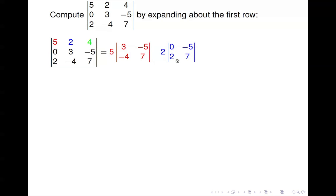Continuing across the first row, we have the 4. We multiply 4 by the determinant of the matrix after eliminating the first row and third column, leaving the 2x2: 0, 3, 2, negative 4. I've written all three terms out without combining them yet, because there's a method for combining them using sign coefficients.